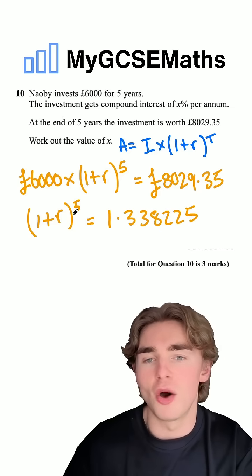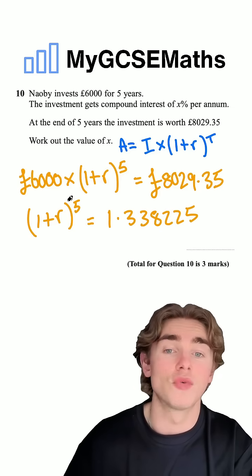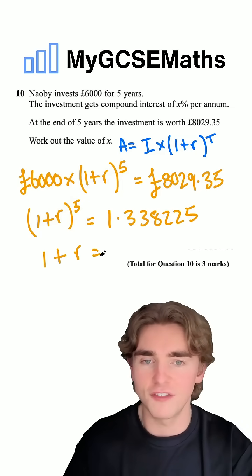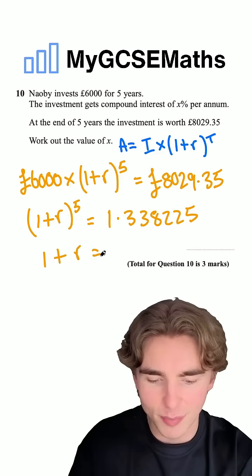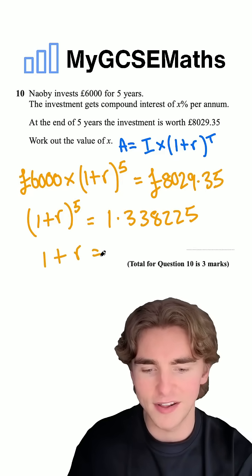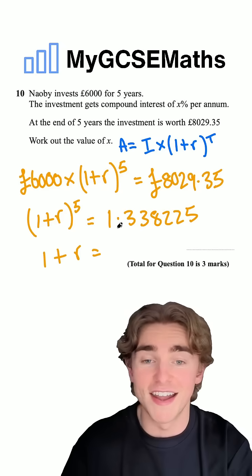And then to isolate the R, well, at the moment it's in brackets and it's being raised to the power of five. So I'm going to do the fifth root of both sides. I'm going to type that into the calculator, the fifth root of my answer. So typing in the fifth root, and then I'm going to hit the answer button, and we're going to get 1.059999.